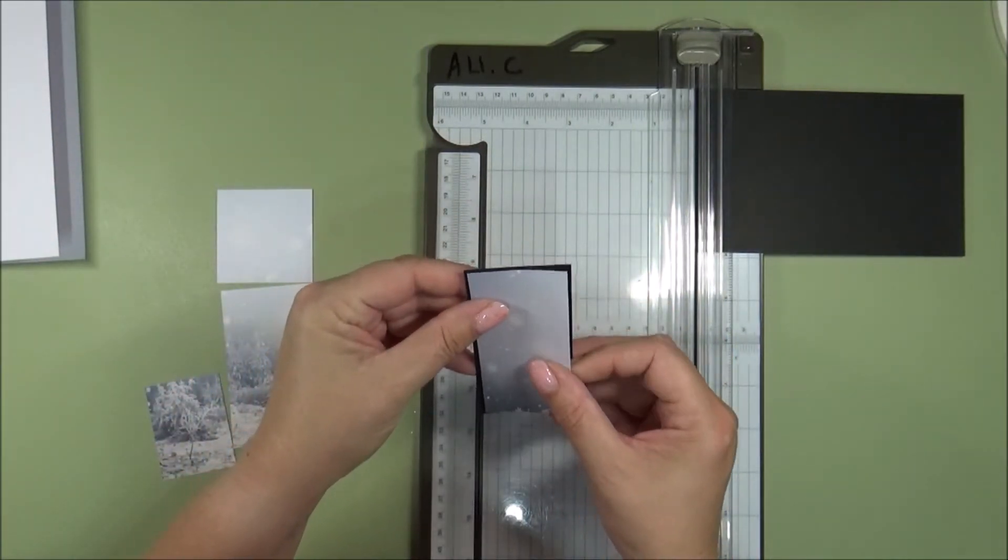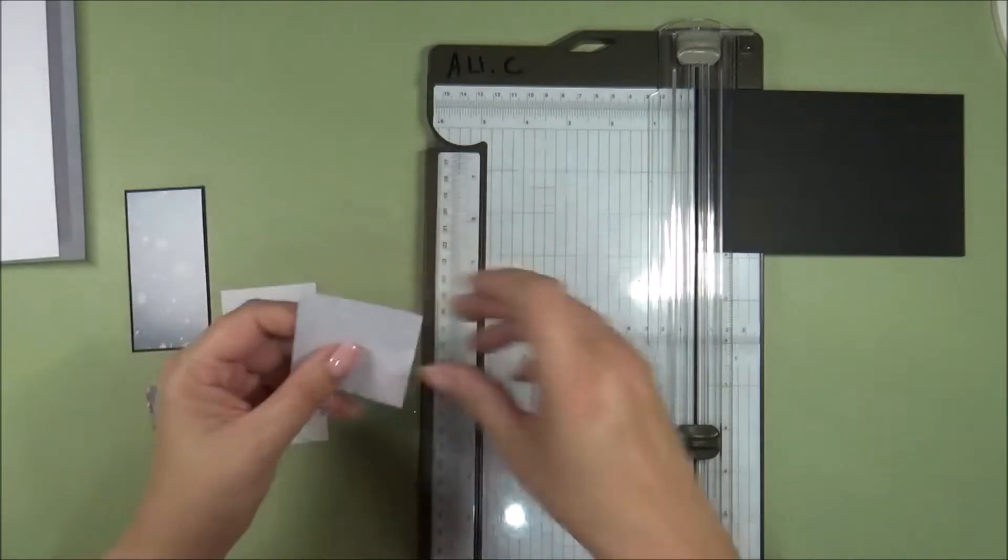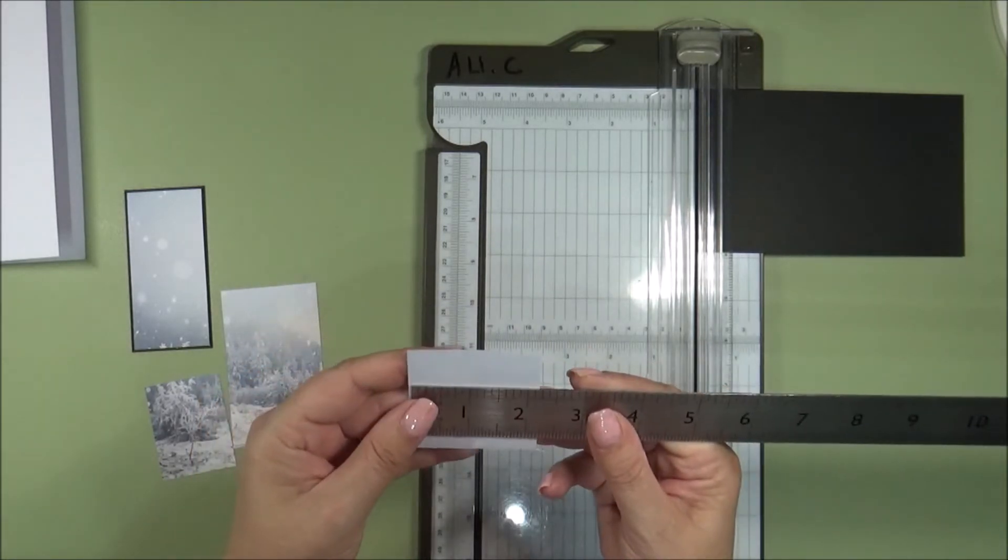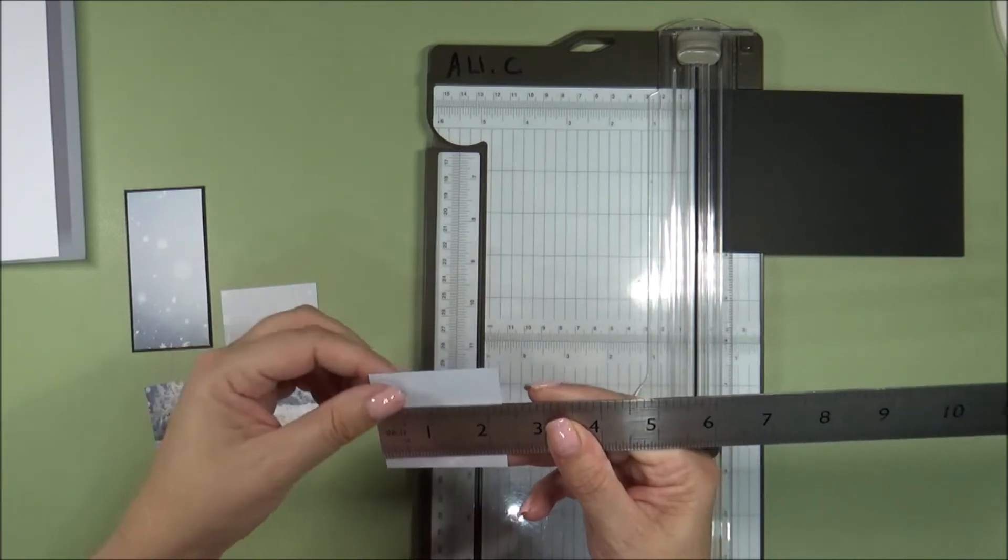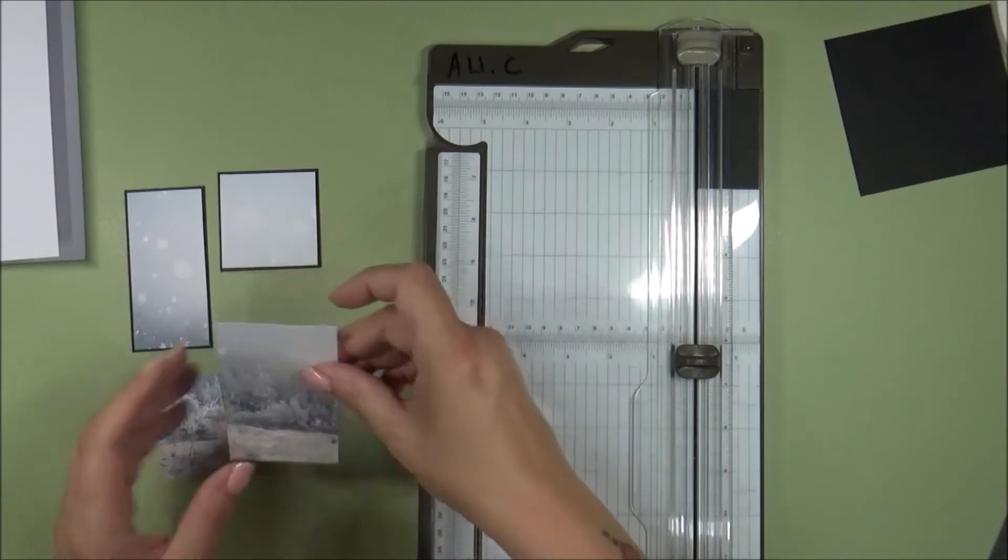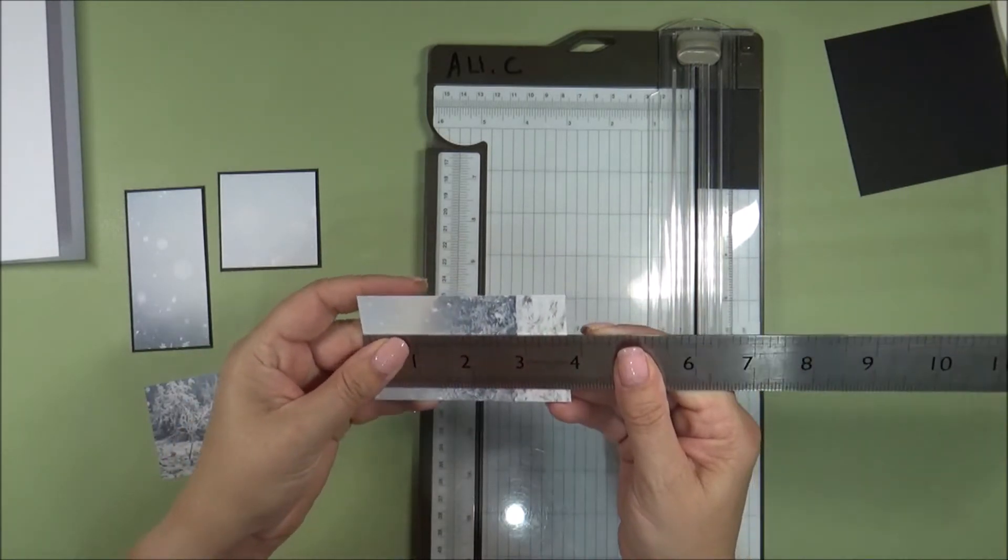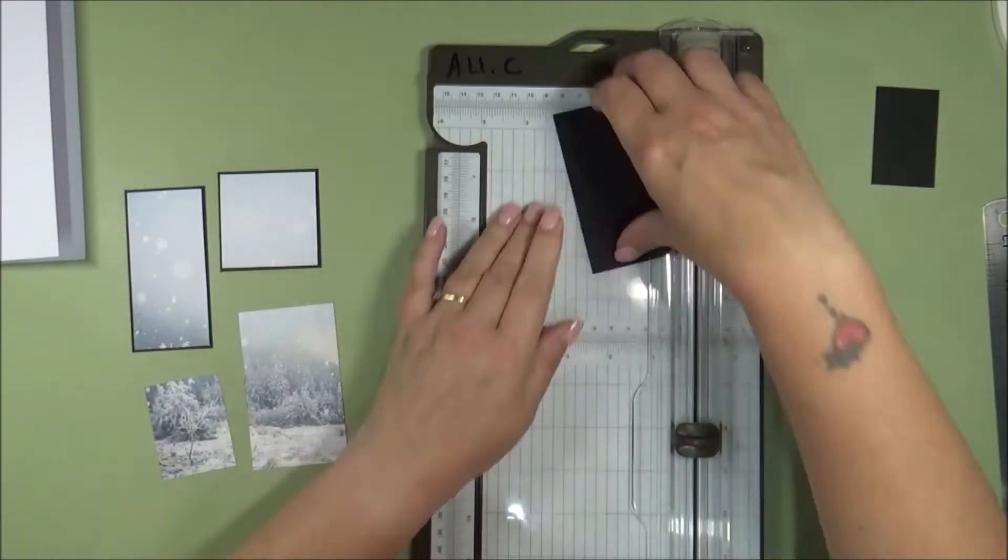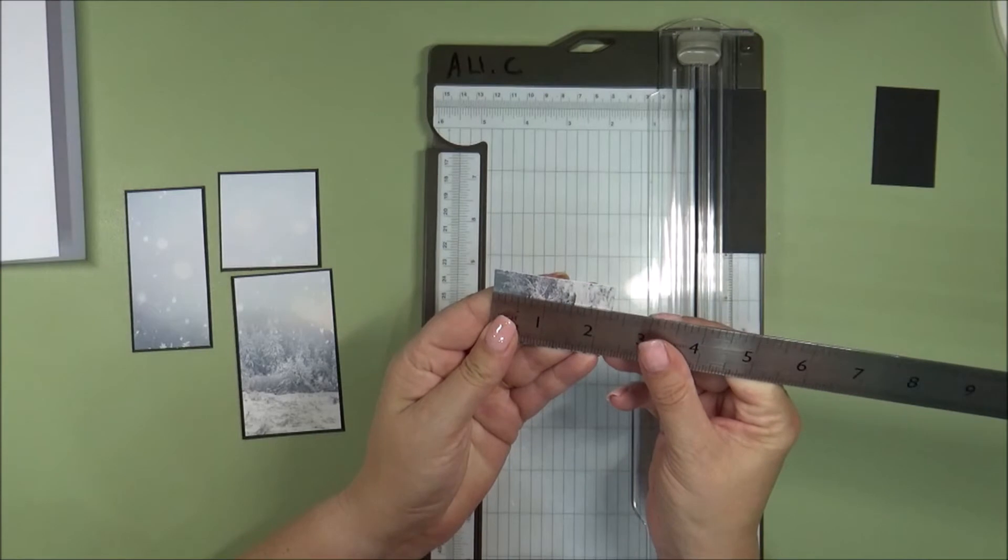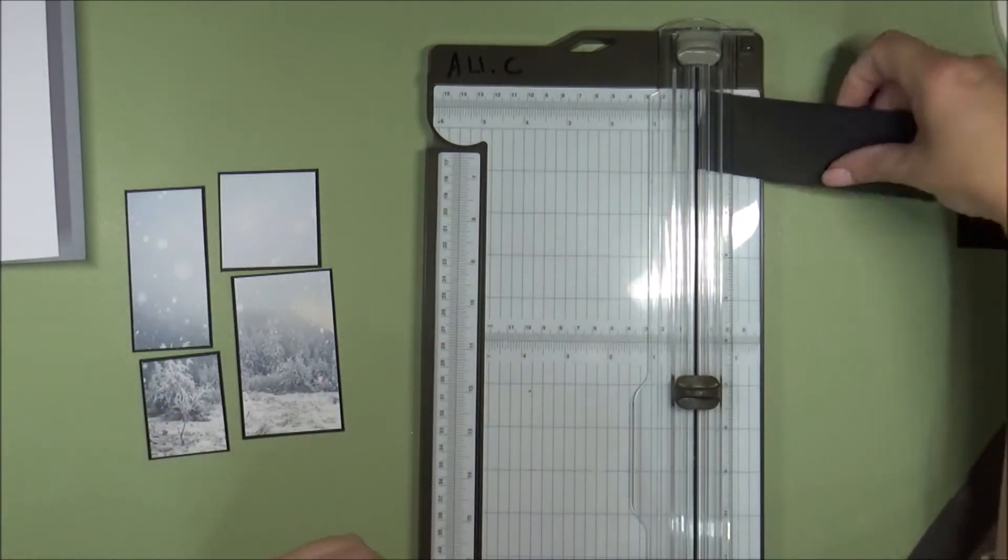And so now your pattern piece will just sit on top of your black mat like that. So measure your other pieces. So this square piece is 2 1⁄4 by 2 1⁄4. So I'm going to do my black mat at 2 3⁄8 by 2 3⁄8. And then this piece we will do at 2 3⁄8 by 3 7⁄8. And then the final piece is 1 7⁄8 by 2 3⁄8. So that's our pieces there.